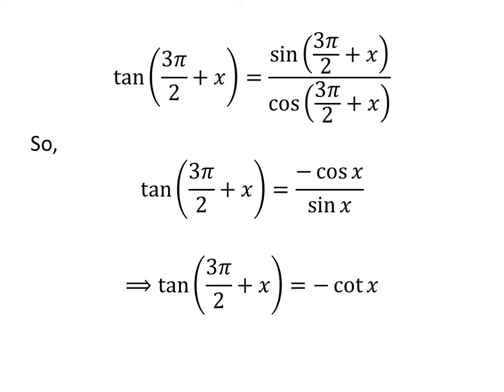As cosine of x upon sine of x is equal to cotangent of x, tangent of 3 times pi upon 2 plus x is equal to minus cotangent of x.